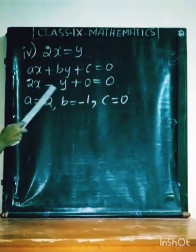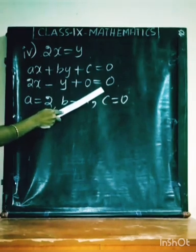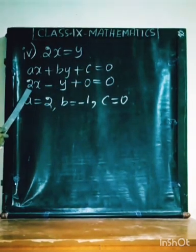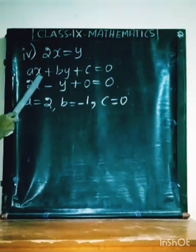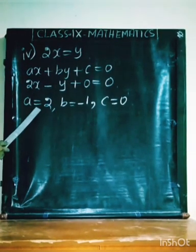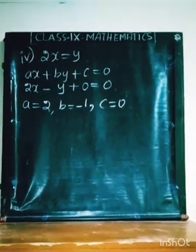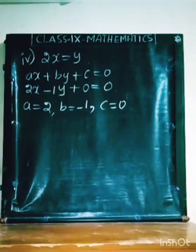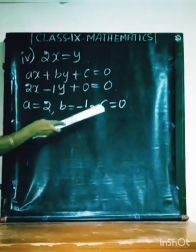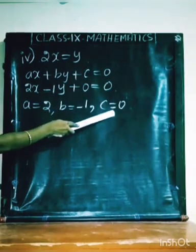So the equation is 2x minus y plus 0 equal to 0. Comparing with the general form: the coefficient of X gives A equal to 2, the coefficient of Y is minus 1 so B equal to minus 1, and the constant term gives C equal to 0.